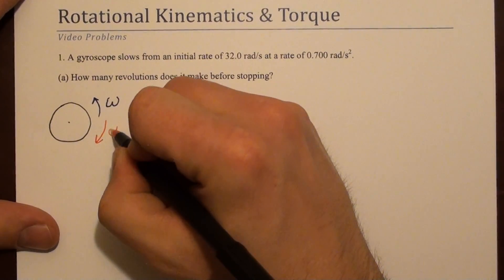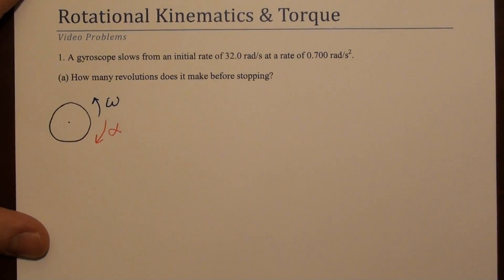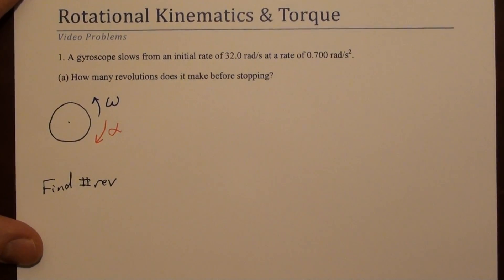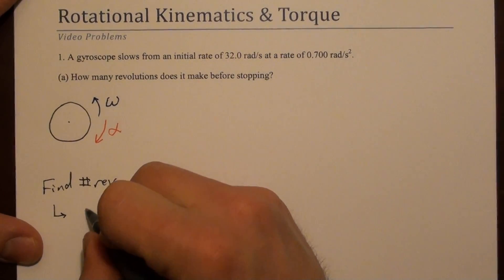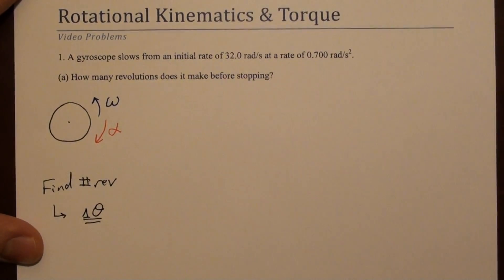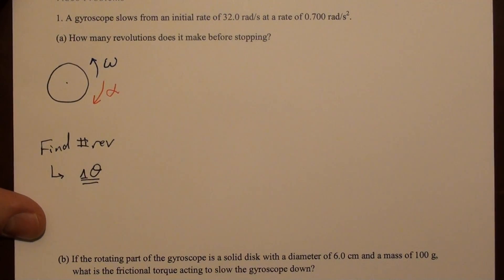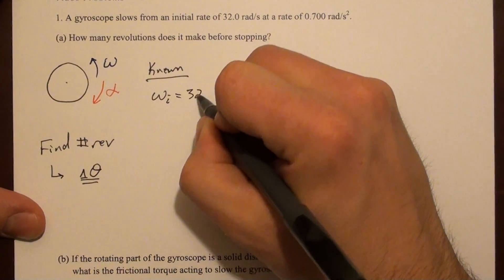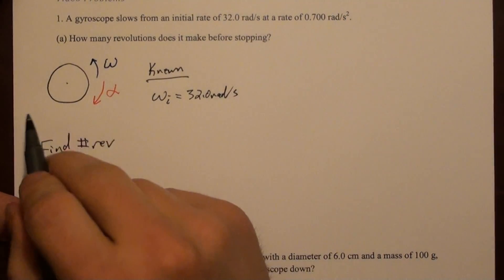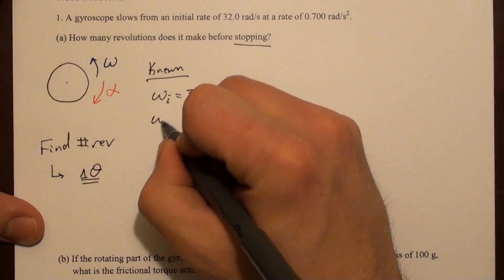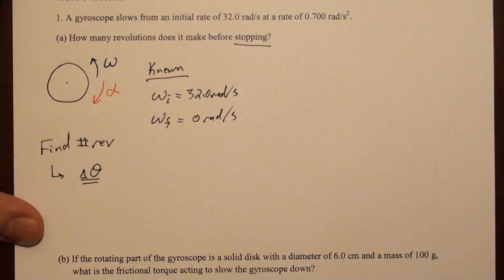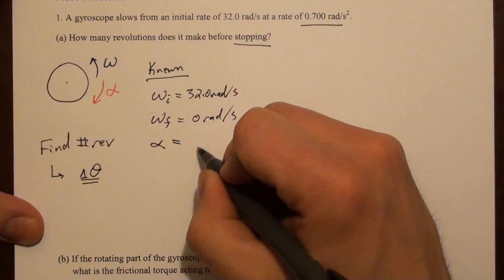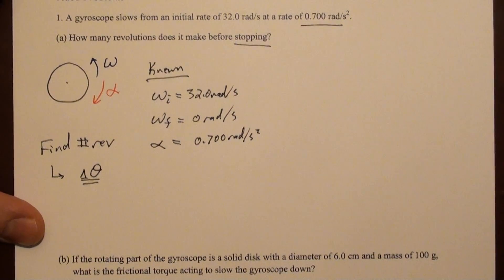So we're asked to find the number of revolutions while this comes to rest. And you should recognize that that's related to delta theta, right? The angle that this travels through as it's slowing down. Okay, so let's write down things that we know. Known values. We know omega initial is 32 radians per second. It's asked how many revolutions before it comes to a rest. So that is omega final, 0 radians per second. And they give us this rate. That rate is an alpha value, right? 0.7 radians per second squared.